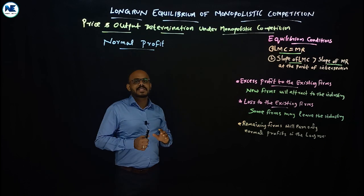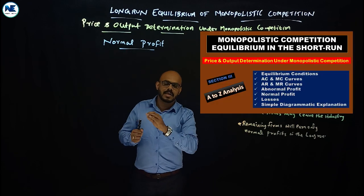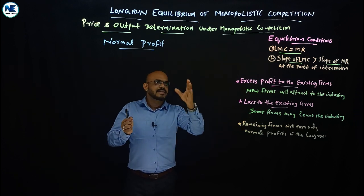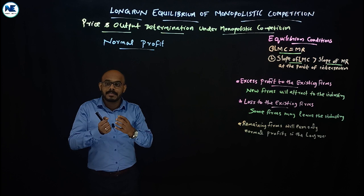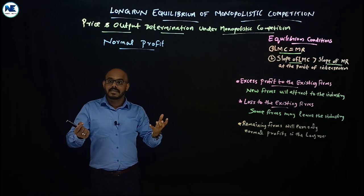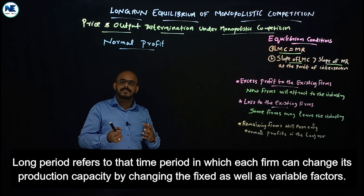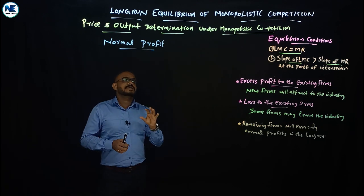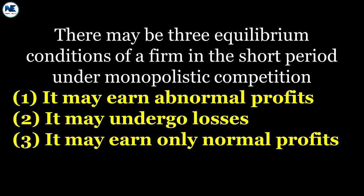Long run equilibrium of monopolistic competition. In a previous video I discussed short run equilibrium of monopolistic competition. Here we discuss price and output determination under monopolistic competition during the long run. The peculiarity of the long run is that time is enough to change the size of the plant and install more machinery or sophisticated technologies. In the long run there is no difference between fixed and variable factors of production - all factors are variable.